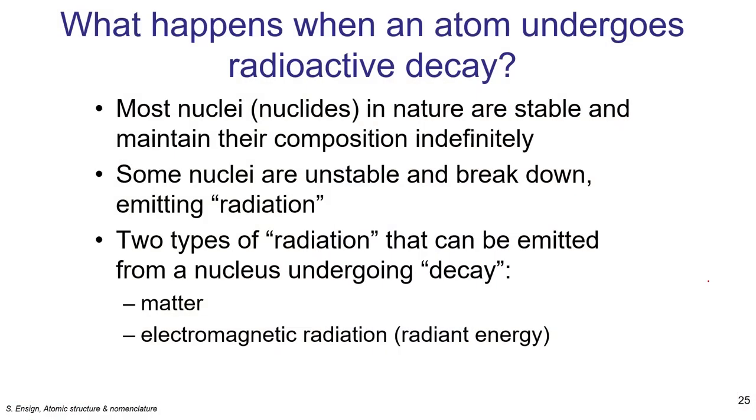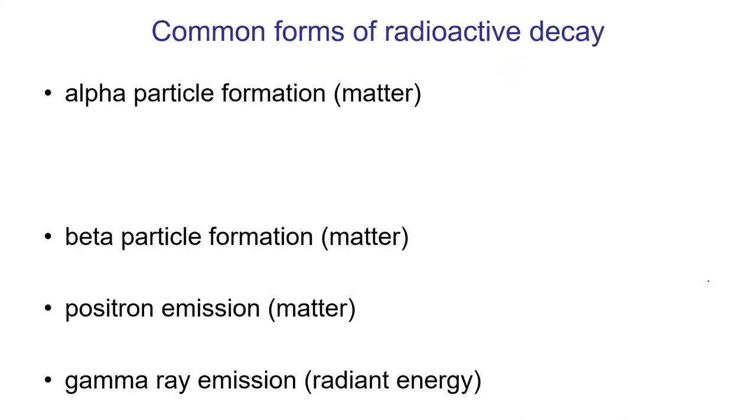So what I want to spend the rest of our time today talking about mostly is what happens, what is emitted during the process of radioactive decay. So here are four common types of radioactive decay that we are going to demonstrate for you. The first of these things is something called an alpha particle. An alpha particle is a form of matter that contains two protons and two neutrons. It's the nucleus of a helium atom. The second form of radiation that can stream out of something when it decays is an electron, which when it comes out of an atom we call a beta particle.